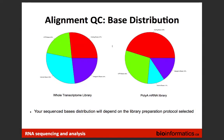Base distribution: looking at all aligned bases, what percentage are coding, UTR, intronic, and so on. This gives you an idea of what library was used. If you're unsure whether whole transcriptome or poly-A selection was used, this plot reveals it. For poly-A libraries, you expect a lot more coding bases than for whole transcriptome. If something looks strange, go back and talk to the people who prepared the libraries.